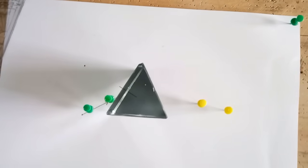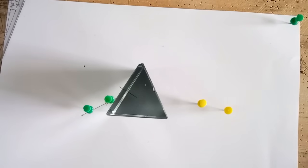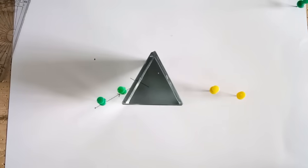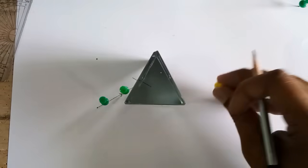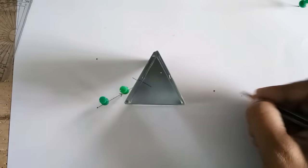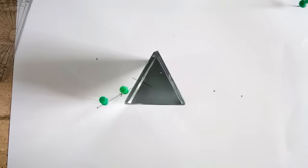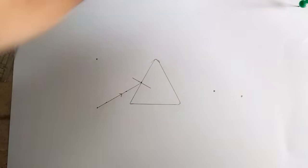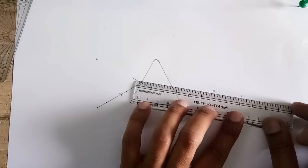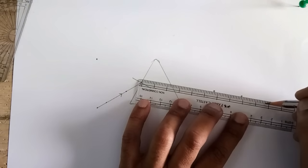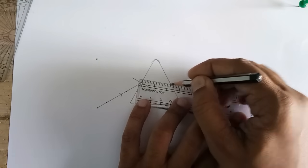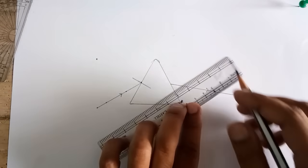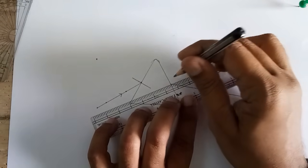Now we are going to mark these two places. I am going to remove these pins. Now we will put the prism aside. These two points join with a straight line over here. This will be your emergent ray and from here the normal is at an angle of 90 degree. So this will be the angle of emergence, this is the angle of incidence.